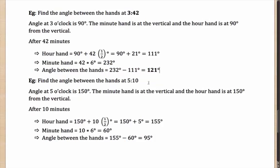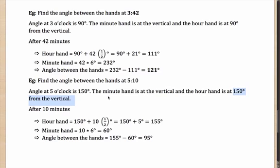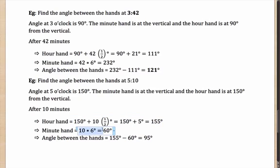Try another one: angle between the hands at 5:10. Angle at 5 o'clock is 150 degrees (30n). Minute hand is at the vertical; hour hand is at 150 degrees from the vertical. In 10 minutes, the hour hand moves 10 × 0.5 = 5 degrees, reaching 155 degrees. The minute hand moves 10 × 6 = 60 degrees. The angle between them: 155 − 60 = 95 degrees. That is the answer.